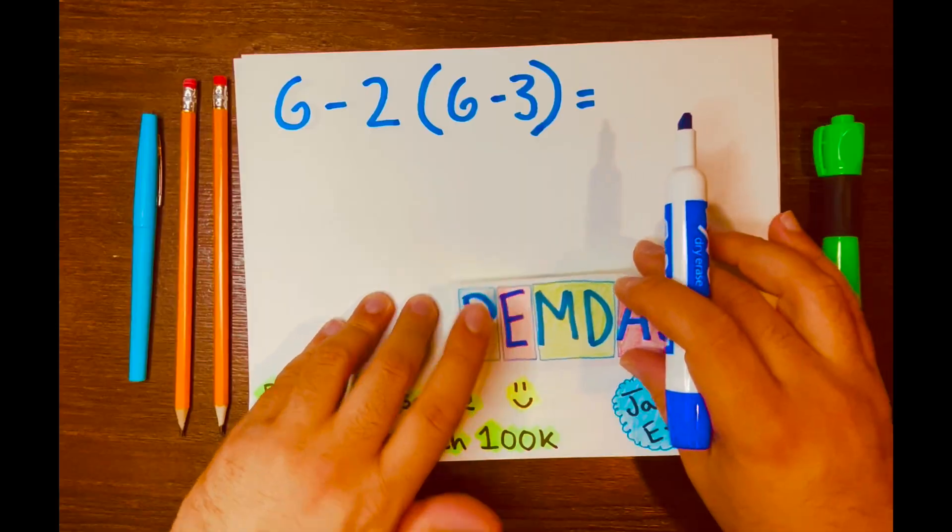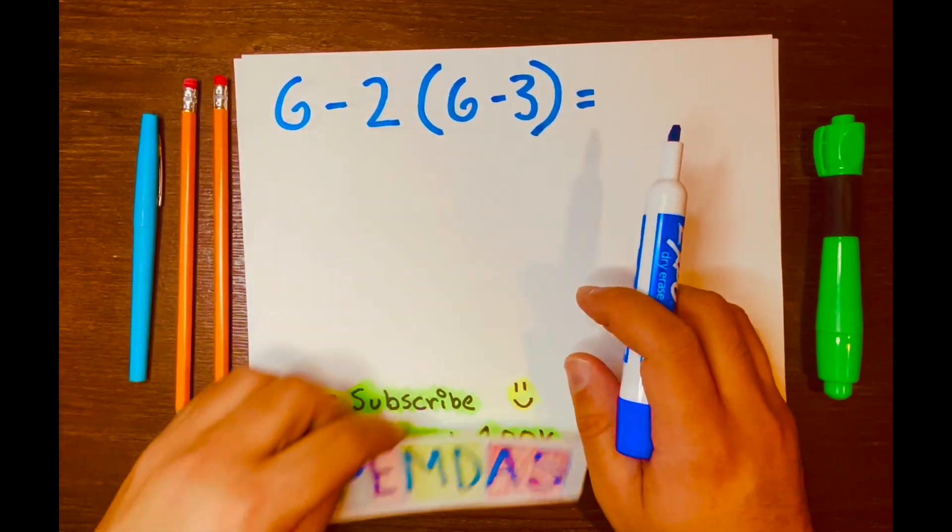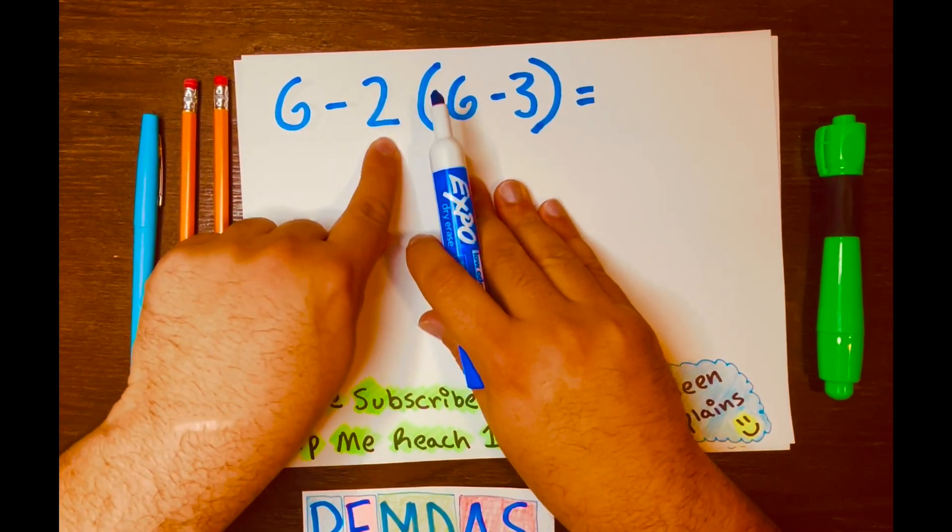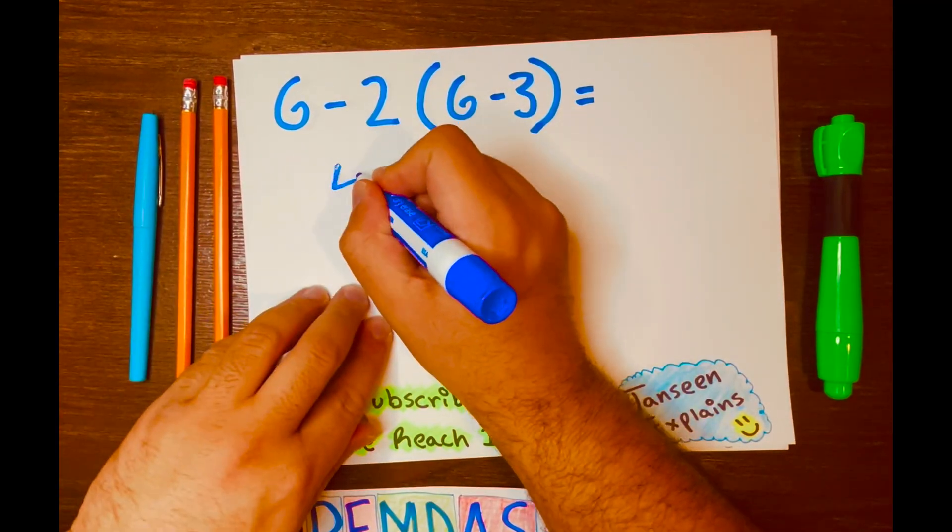Now, some people, when they start solving this math problem, they'll first subtract 6 minus 2. So what is 6 minus 2? 4. So they'll write 4.